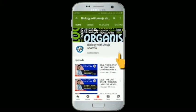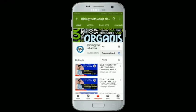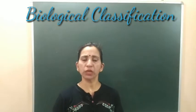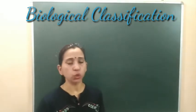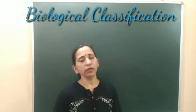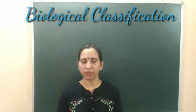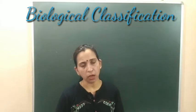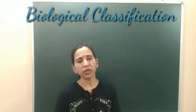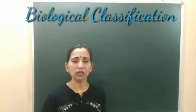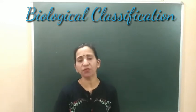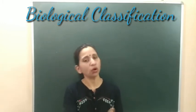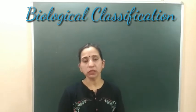Subscribe to my channel and press the bell icon to get all notifications. Hello students, we are discussing about the five kingdom system classification given by R.H. Whittaker. In this system, Whittaker tried to classify all living organisms into five kingdoms: Monera, Protista, Fungi, Plantae, and Animalia. However, some organisms or particles were not given any particular place in this five kingdom classification. Today we are going to discuss such non-cellular organisms, like viruses, viroids, and prions.